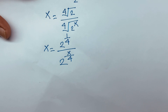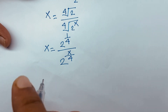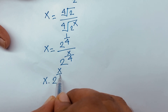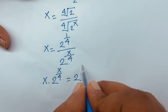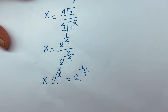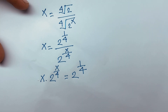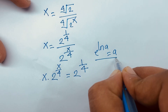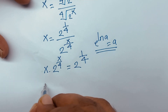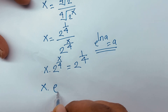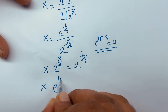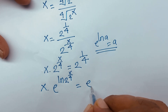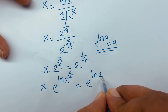If I multiply both sides by 2 to the power x over 4, this time I can say x times 2 to the power x over 4 is equal to 2 to the power 1 over 4. Then, using the rule that e to the power ln a is equal to a, I can say x times e to the power ln(2^(x/4)) equals 2 to the power ln(2^(1/4)).